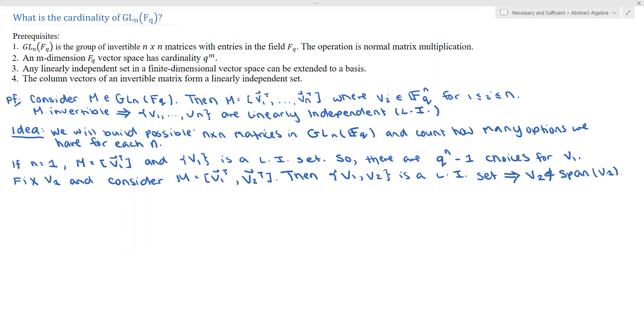But this implies that V2 is not in the span of V1. But remember, so V1, this is just a single vector in FQ to the n. So let's think about it this way. So notice the span of V1 is a one-dimensional FQ vector space. So what does this mean? From prerequisite 2, we know that the span of V1 has cardinality Q, just Q.